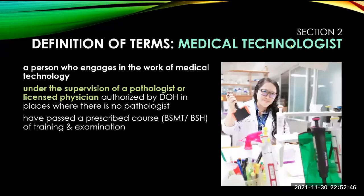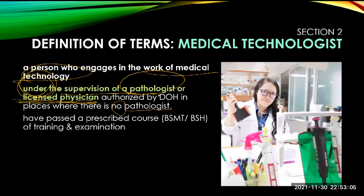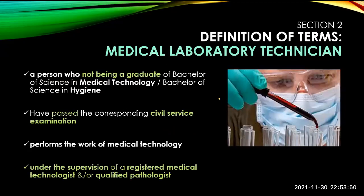Who is a medical technologist? It is a person who engages in the work of medical technology. Always remember — under the supervision of a pathologist, or in areas where there is no registered pathologist, licensed physicians are allowed by the Department of Health to supervise medical technologists. A medical technologist must have passed a prescribed course — a Bachelor of Science in Medical Technology or Bachelor of Science in Hygiene. A medical technologist is a highly skilled health professional who tests and analyzes blood and other body fluids and tissue samples, and is responsible for operating and maintaining the equipment used to analyze specimens, ensuring tests are completed correctly and in a timely manner.